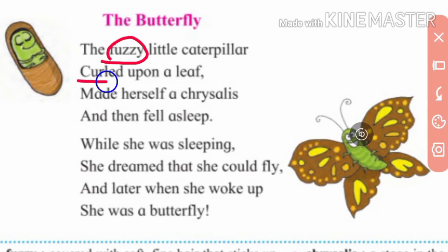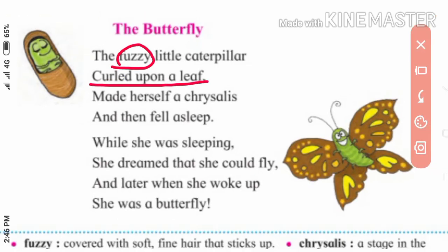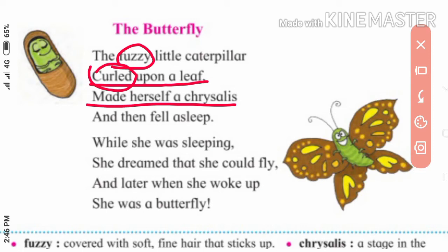'Called upon a leaf' — she wraps herself in a leaf. She wraps herself and makes a chrysalis. In the chrysalis stage she wraps herself inside the leaf and gradually transforms, and then she fell asleep.